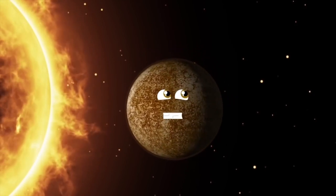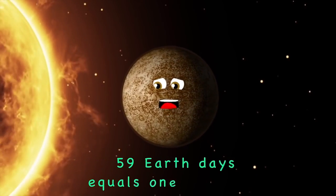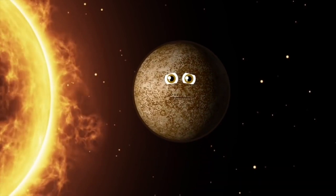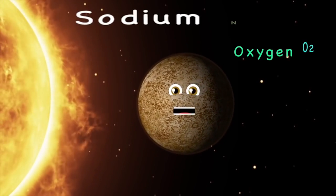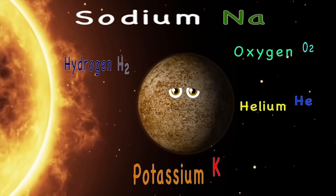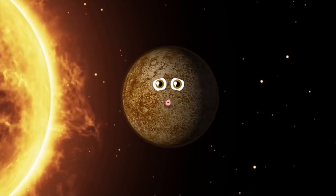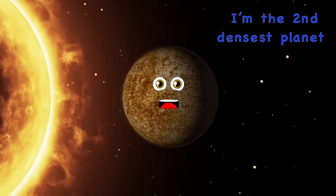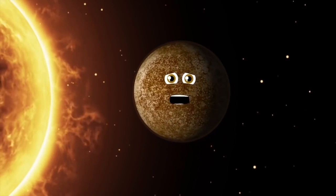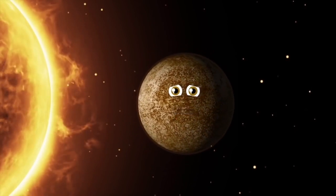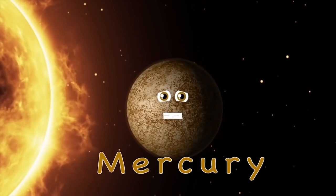59 Earth days equals one day on me. My surface is made of stone covered in craters. Oxygen, sodium, hydrogen, helium, and potassium make up my exosphere. I have no moons and I have no rings.